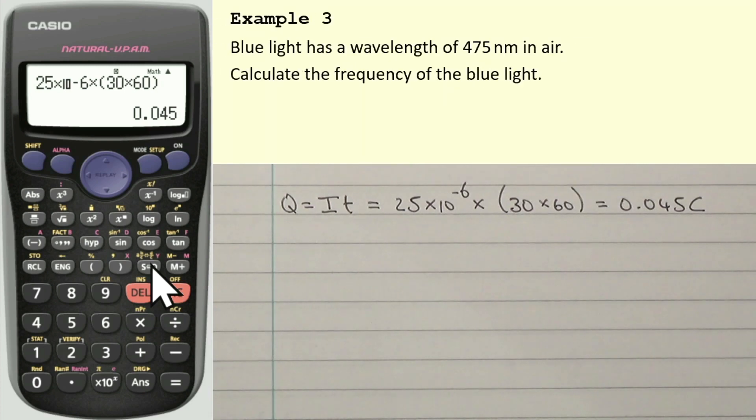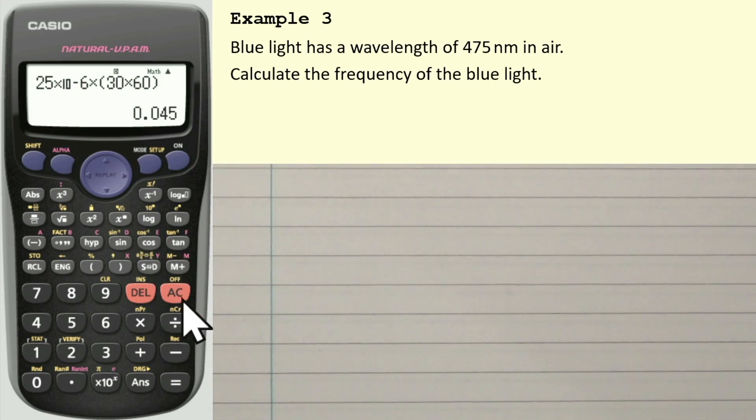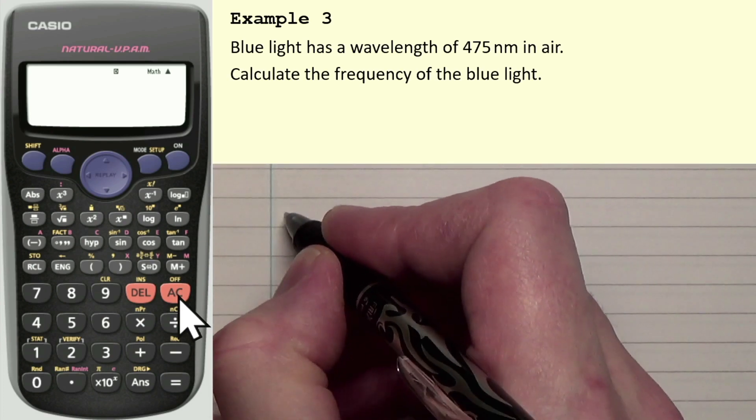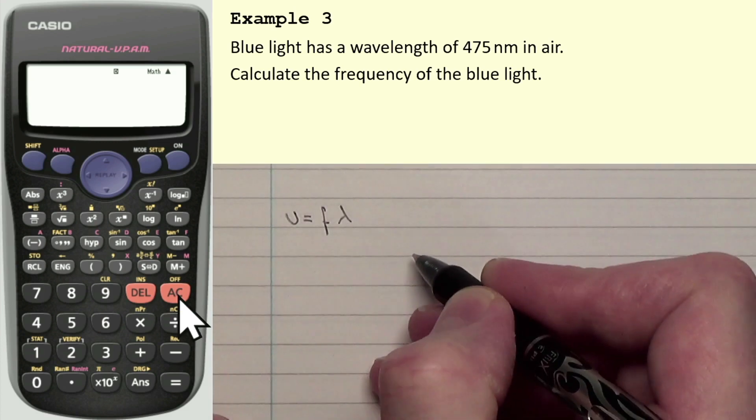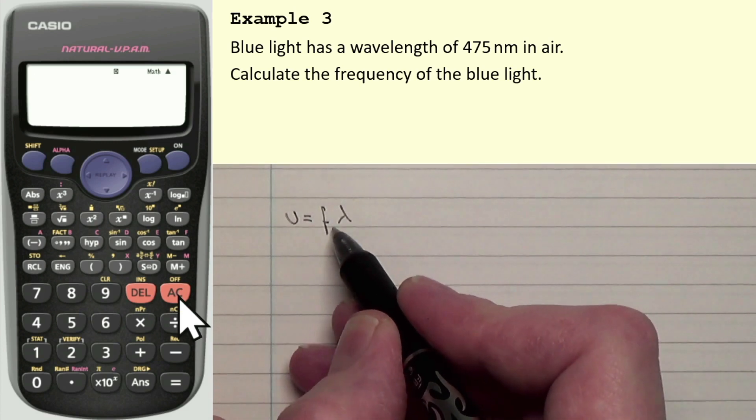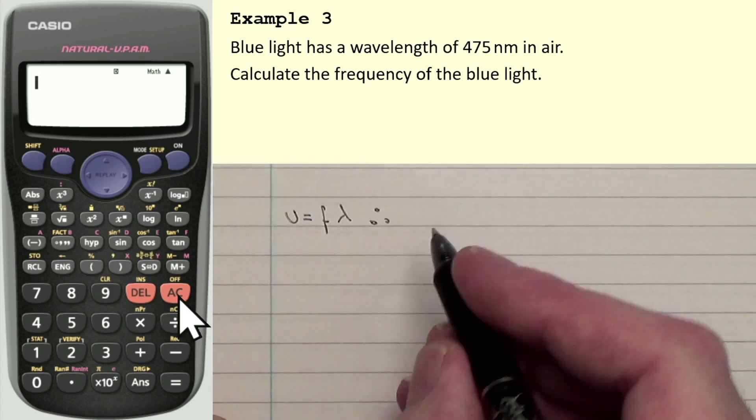The last example looks like so. Blue light has a wavelength of 475 nanometers in air. Calculate the frequency of the blue light. I'll give myself more space and I will press all clear in the calculator. For this one, we have to use an equation, which is V is equal to F times lambda. So, V is the speed, F is frequency, and lambda is wavelength. And, we want to rearrange this equation to find F.